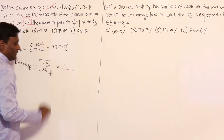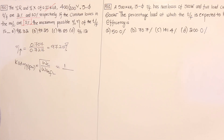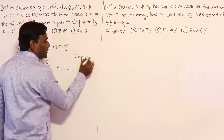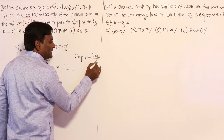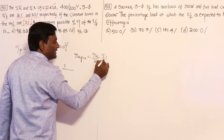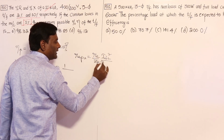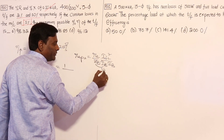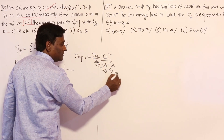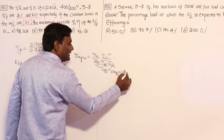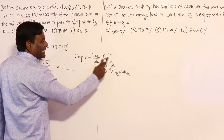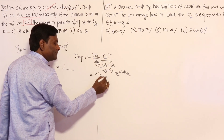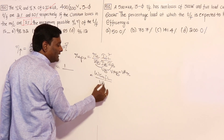The full load copper loss is nothing but RE per unit. RE per unit equals RE divided by Z-base, times I_FL squared divided by I-base squared. Z-base times I-base equals V-base, and V-base times I-base equals VA-base, which is VA rated for a transformer. So I_FL squared times RE equals full load copper loss, and dividing by VA rated gives copper loss full load per unit.